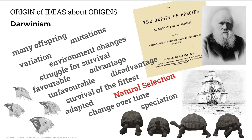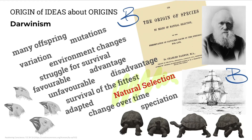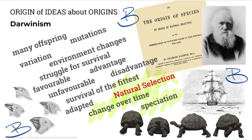Darwin, on the other hand, explained evolution in terms of a mechanism called natural selection. Darwin wrote a book called On the Origin of Species. He travelled around the world in a boat called the HMS Beagle, and he studied birds on the Galapagos Islands, as well as many other animals. He proposed that species change very, very slowly over time — we call that speciation — to form new species. These slow changes are known as gradualism.